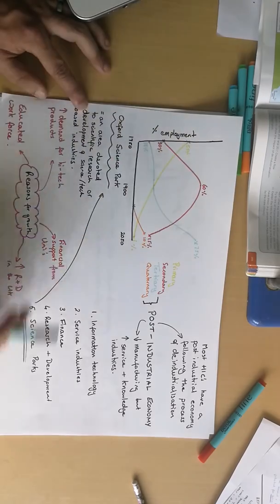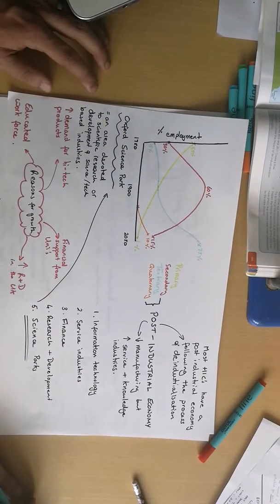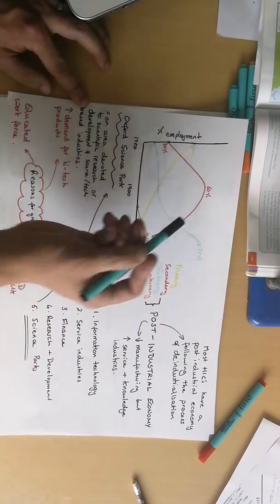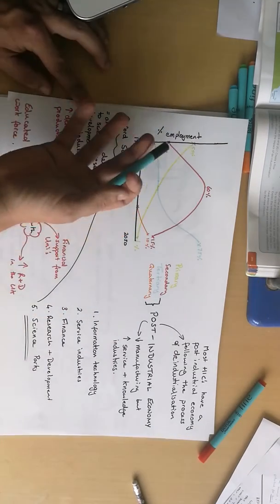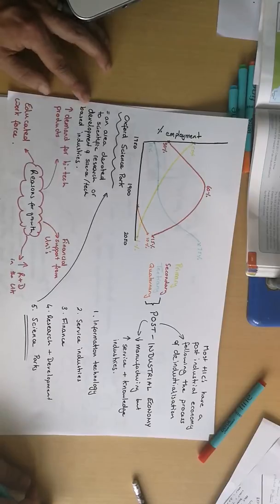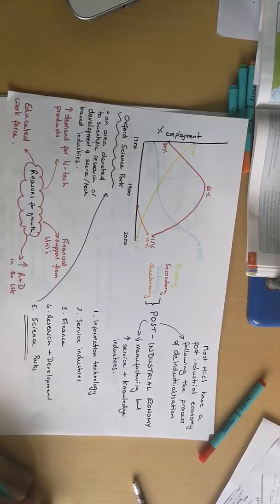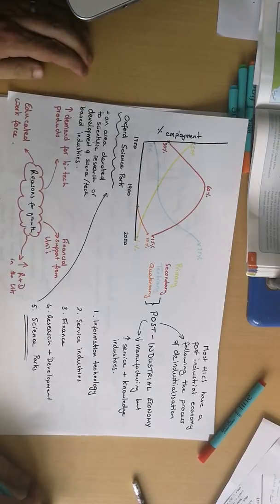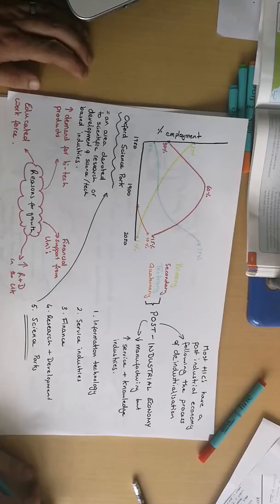What we've seen though is as that manufacturing has been outsourced, a growth in service industries. That is quite common for high income countries to have a large amount of tertiary employment. As much of the actual doing jobs, the manufacturing, are outsourced, but things such as the provision of the services, doctors, nurses and the design and research of products remains in the high income country.